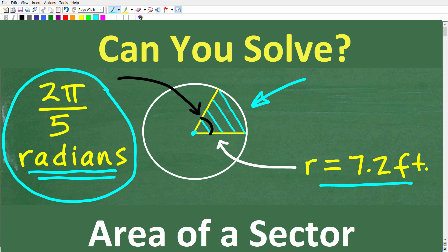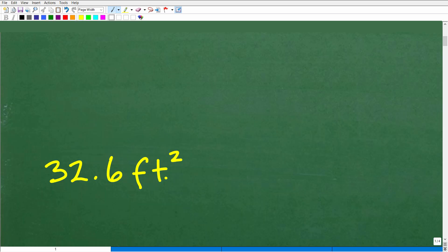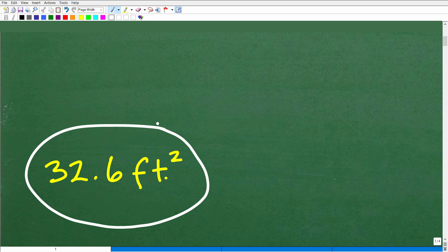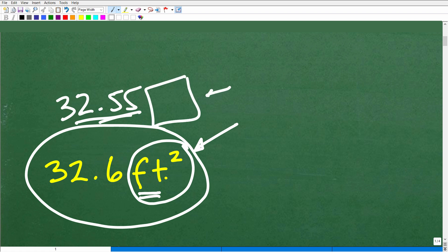The area of that sector would be approximately 32.6 feet squared. So let's suppose you have like 32.55 or something like that and you said, well, I was pretty close. Of course, I kind of rounded up a bit.